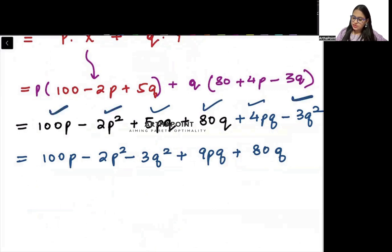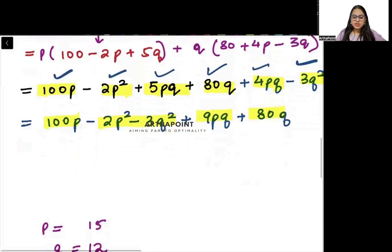The question is asking to find approximate change in total revenue and compare it with actual change. Approximate change is calculated when we differentiate the function. So this will be 100P minus 2P squared minus 3Q squared plus 9PQ plus 80Q.